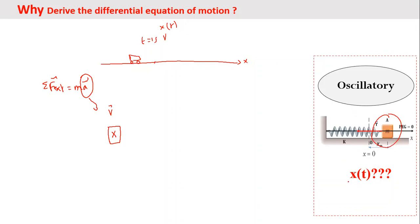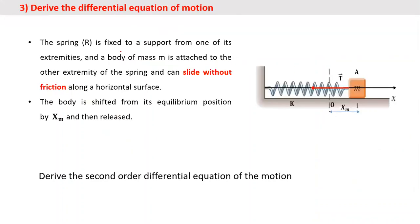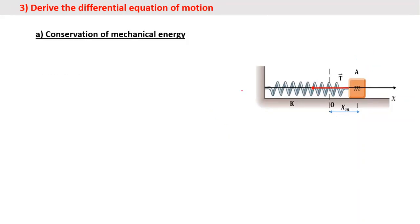The same thing applies here: in order to find the position of the pendulum during the oscillation motion at any instant — to find x(t) — there must be an equation to solve. The equation we must solve is the differential equation of motion. Now, how to find this differential equation? Let's take a horizontal spring pendulum: the spring is fixed to a support at one extremity, a body of mass m is attached to the other extremity and can slide without friction. The body is shifted from its equilibrium position by x_m, so at t equals zero it is at x_m and then it is released.